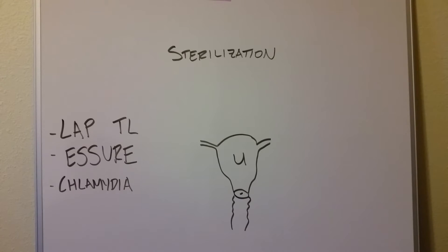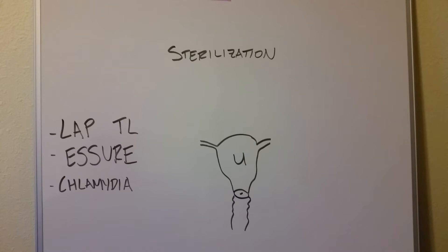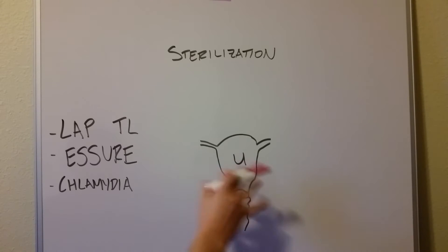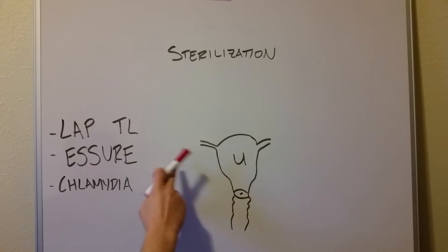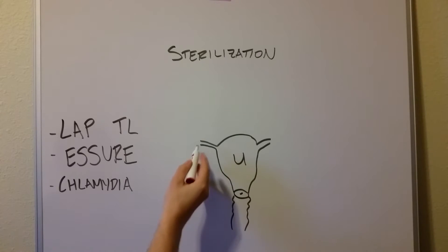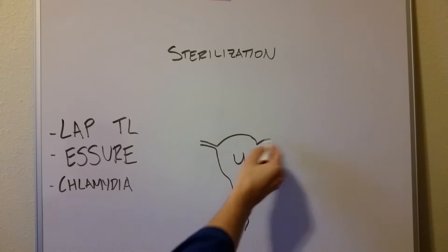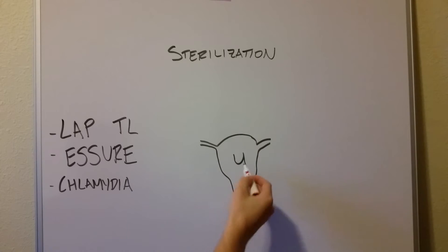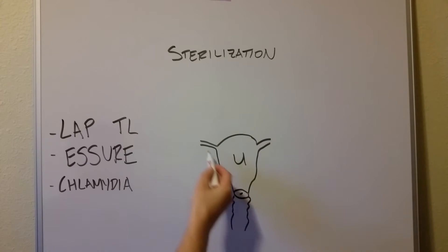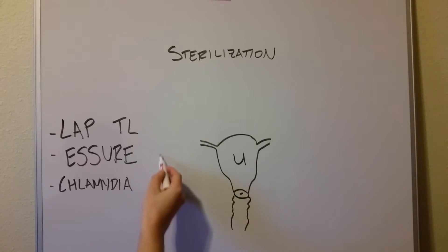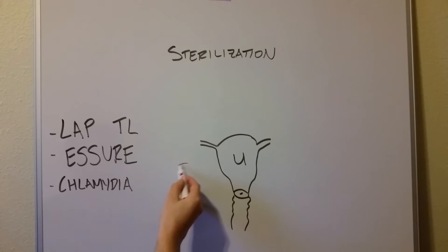What happens in this procedure, either laparoscopically or openly after a C-section, is we go to both sides, isolate that fallopian tube — which is this tube entering into the uterus here. So we have the uterus, cervix, vagina, fallopian tubes, and they would normally go over to an ovary.